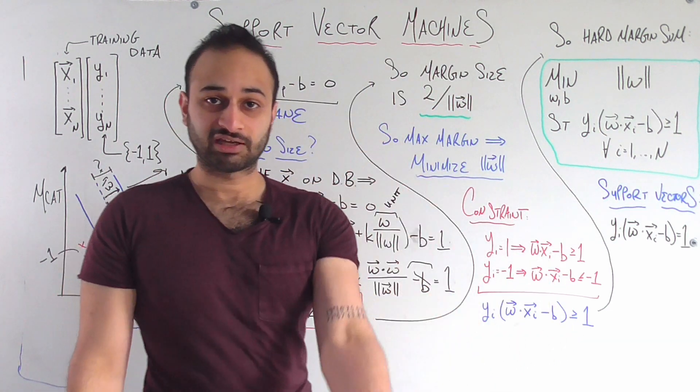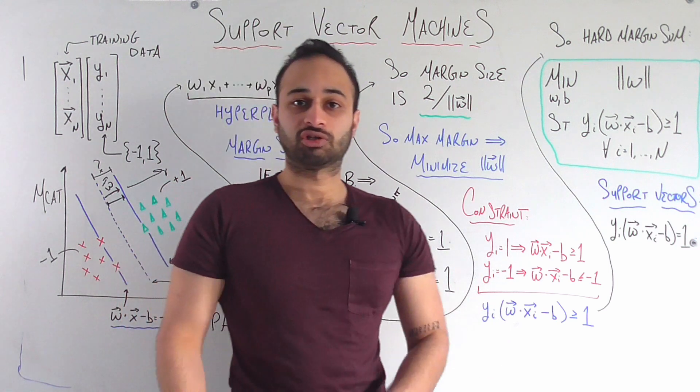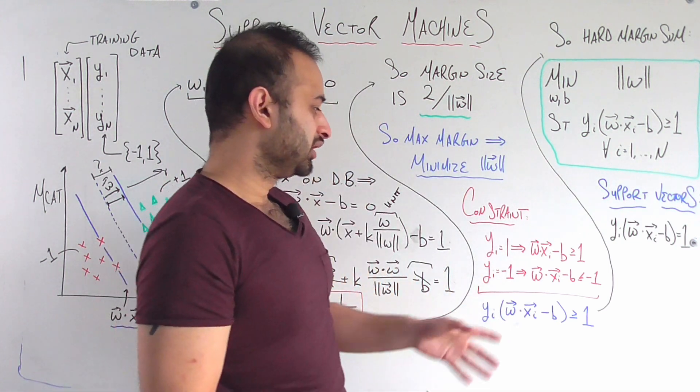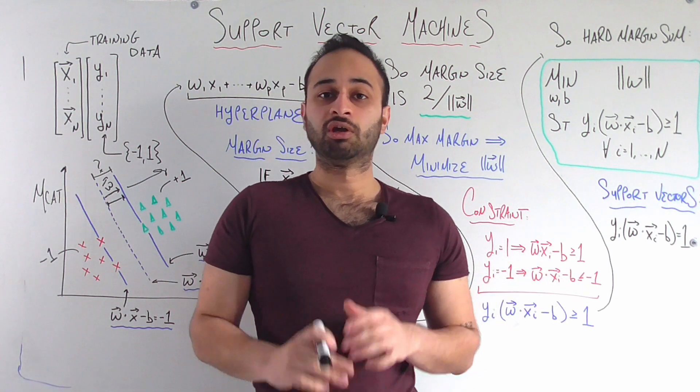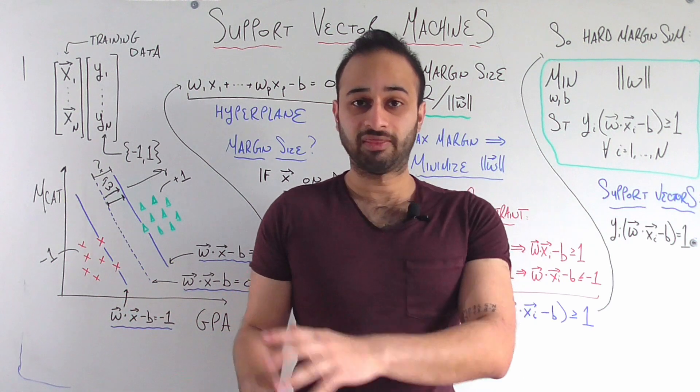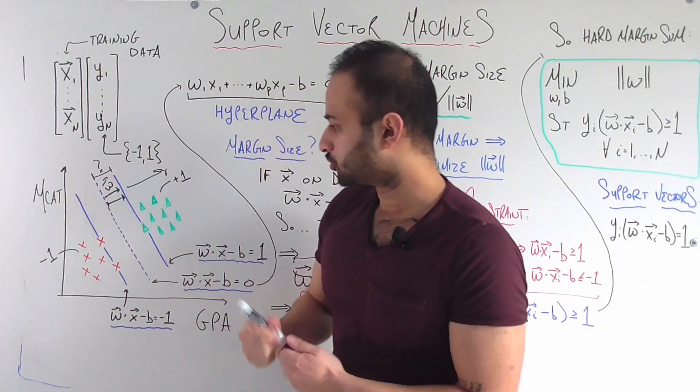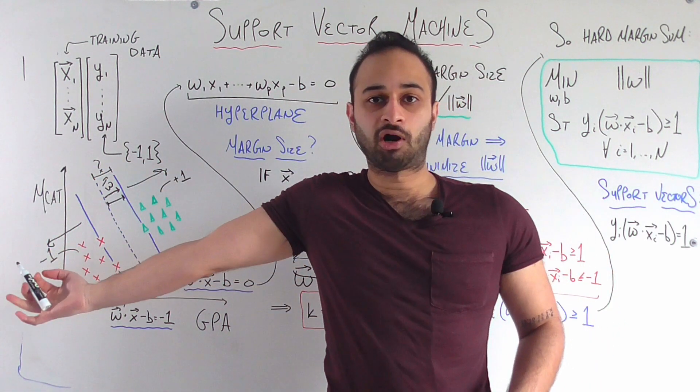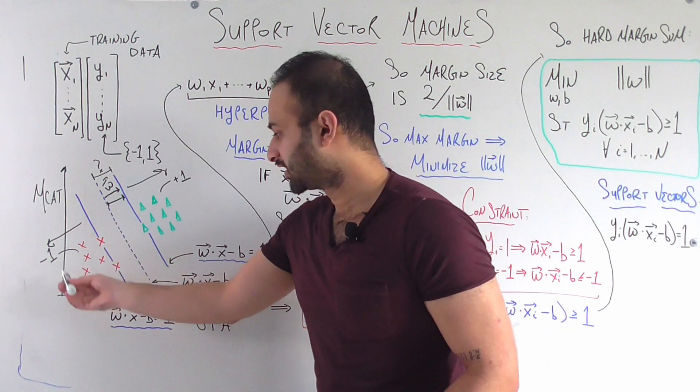And we can also make the second condition, the parallel condition that if yi equals negative 1, which means that the student truly does not get into their top choice medical school, then we need that w dot xi minus b is less than or equal to negative 1. Which vectors in our picture obey that condition? That means that the vector would be on this side of the margin, which means that we require that everyone on that side of the margin is classified as a negative 1, which again is exactly what we would want.